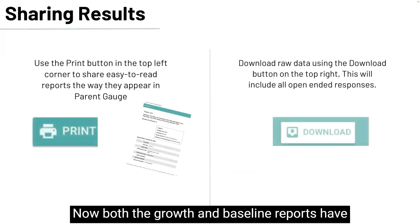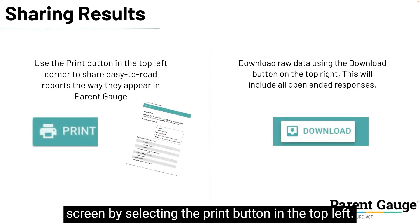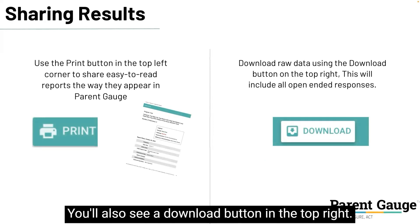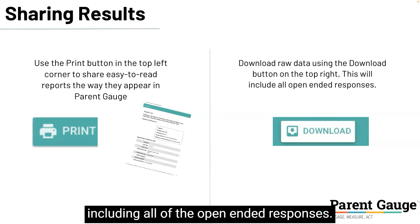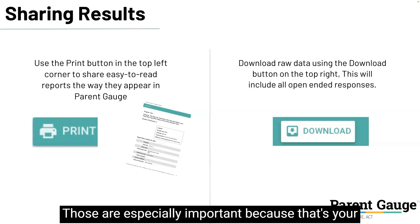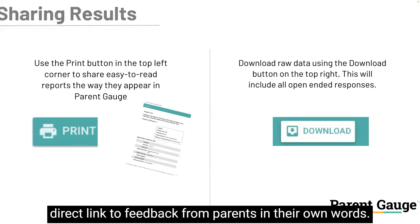Both the growth and baseline reports have the ability to print out the report as seen on the screen by selecting the print button in the top left. You'll also see a download button in the top right. This is where you can download the raw data, including all of the open-ended responses. Those are especially important because that's your direct link to feedback from parents in their own words.